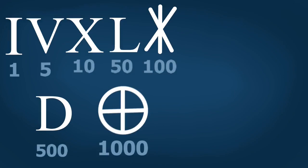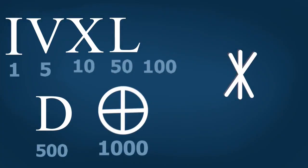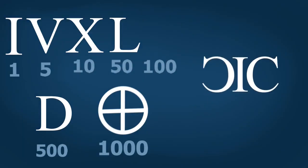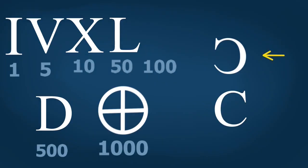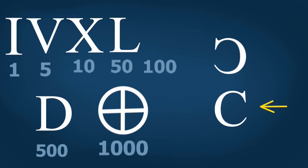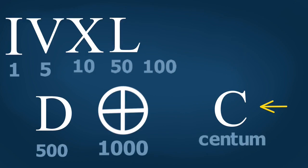Now, one hundred — because that symbol doesn't look like a C at all. What happened is: it started bending and became more rounded, forming a symbol that looks like an I between two C's. That was pretty hard to write. Some Romans, to make it simpler, just wrote one of the C's. Eventually they needed to choose between the two options, and they chose the one that looked like a C — and also the word for one hundred is 'Centum,' which starts with a C. That made a lot of sense.